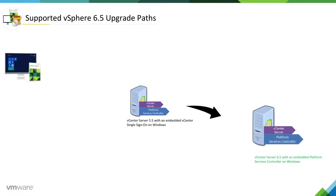Let's say you have vCenter server 5.5 with an embedded vCenter server single sign-on on Windows, and you want to upgrade it to 6.5, then you can make it to vCenter server 6.5 with an embedded platform services controller on Windows. That is one of the supported paths.